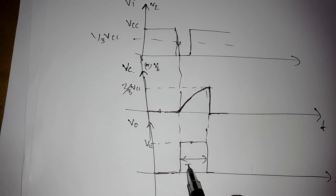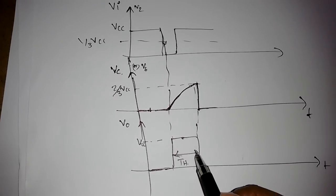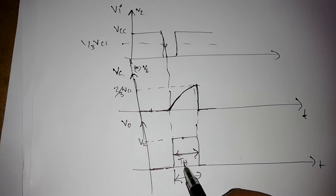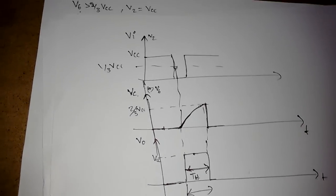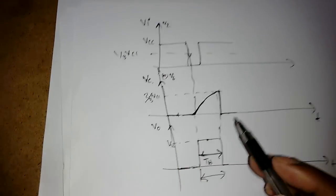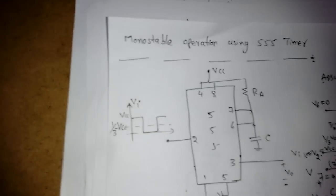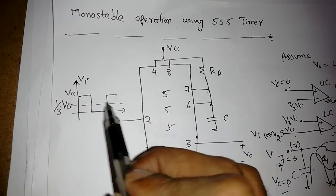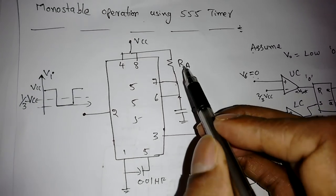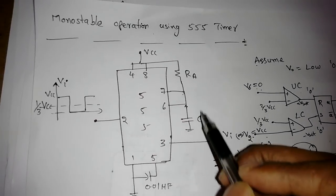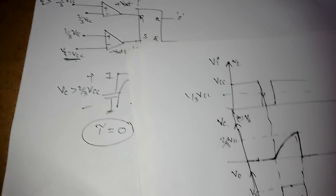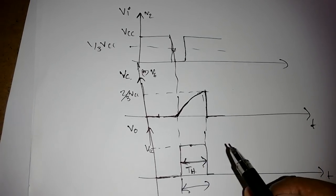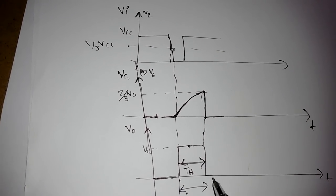The high-time duration in the output waveform is the pulse width we are generating. From the waveform: initially V0 is low; when we apply Vi less than 1/3 Vcc, the output becomes high and the capacitor charges; when V6 exceeds 2/3 Vcc, the output returns to low and the capacitor discharges. This pulse width, also called TH or on-time, is what we need to calculate — and we will derive it in the next lecture.